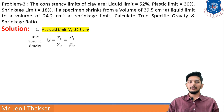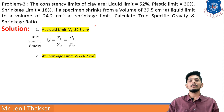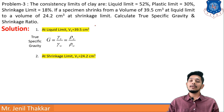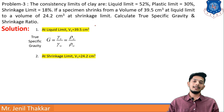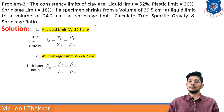For true specific gravity, capital G = ρs / ρw (density of solids divided by density of water). At shrinkage limit, V2 = 24.2 cm³. For shrinkage ratio, SR = ρd / ρw, where ρd is the density of dry soil and ρw is the density of water.